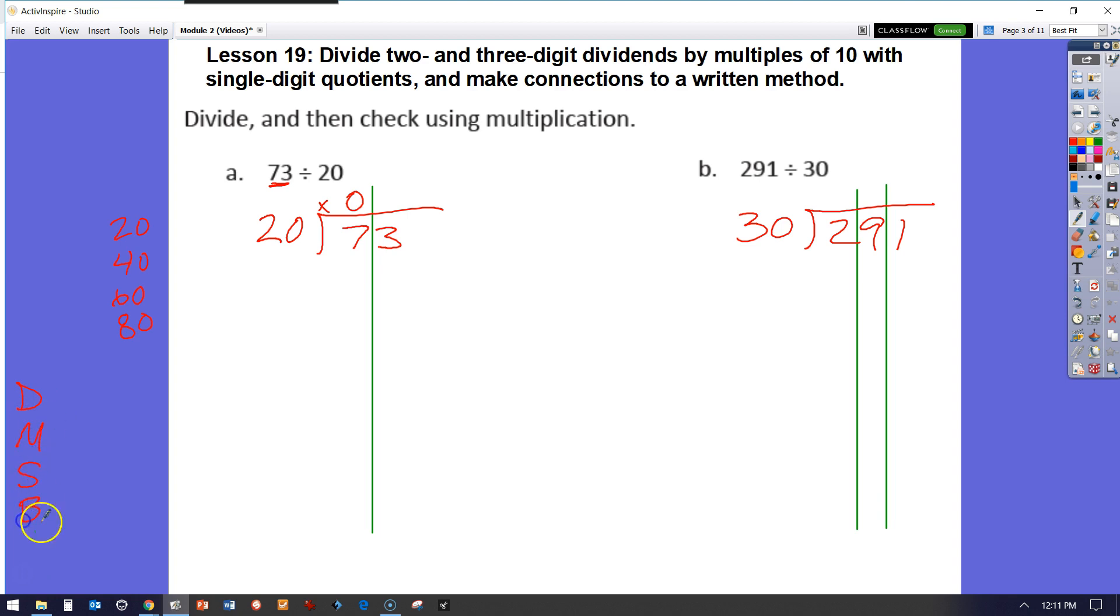Division, multiplication, subtraction, bring down, and repeat. Let's go ahead and walk through that. We just did our division. 7 tens divided by 20 is 0. Check that off.